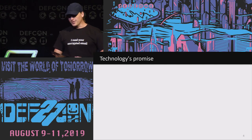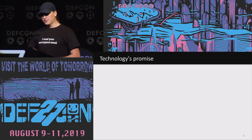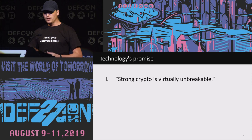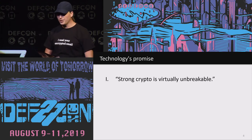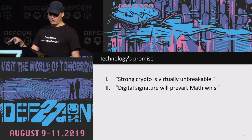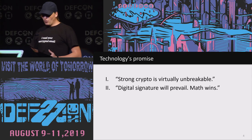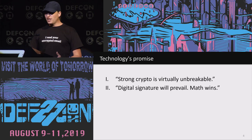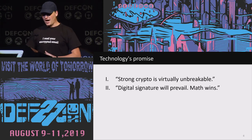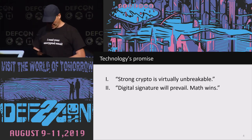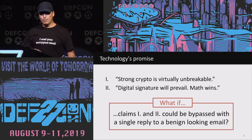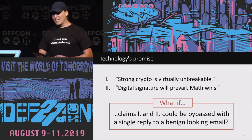Let's start with technology's promise. In the 90s, representatives of the cyberpunk movement claimed: strong crypto is mathematically unbreakable — use it, encryption for the masses. And they were right. Other actors, like government people, believed that by the year 2000 everybody would use digital signatures to sign business contracts — which also didn't really happen. But the key idea is that both rely on mathematically hard problems. So, what if those claims could be bypassed with a single reply to a benign-looking email? That's what today's talk is about.